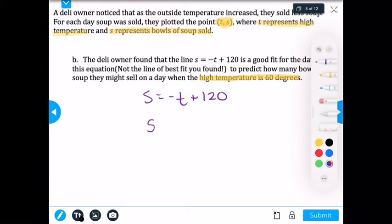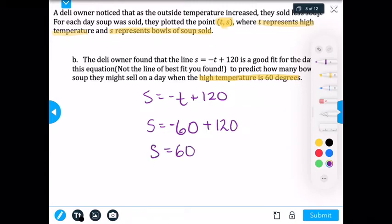So I'm going to rewrite S = -60. Don't forget that negative, plus 120. And I'm going to say S = 60. So I know I'm going to sell 60 bowls of soup on a day that is 60 degrees.